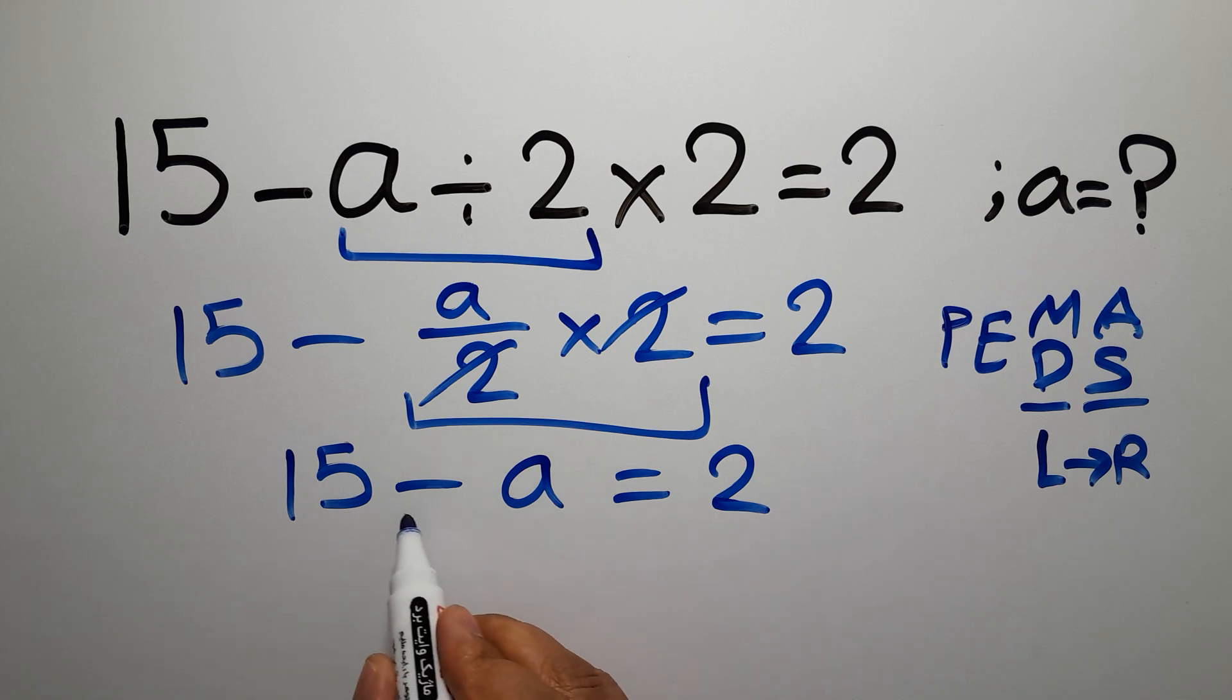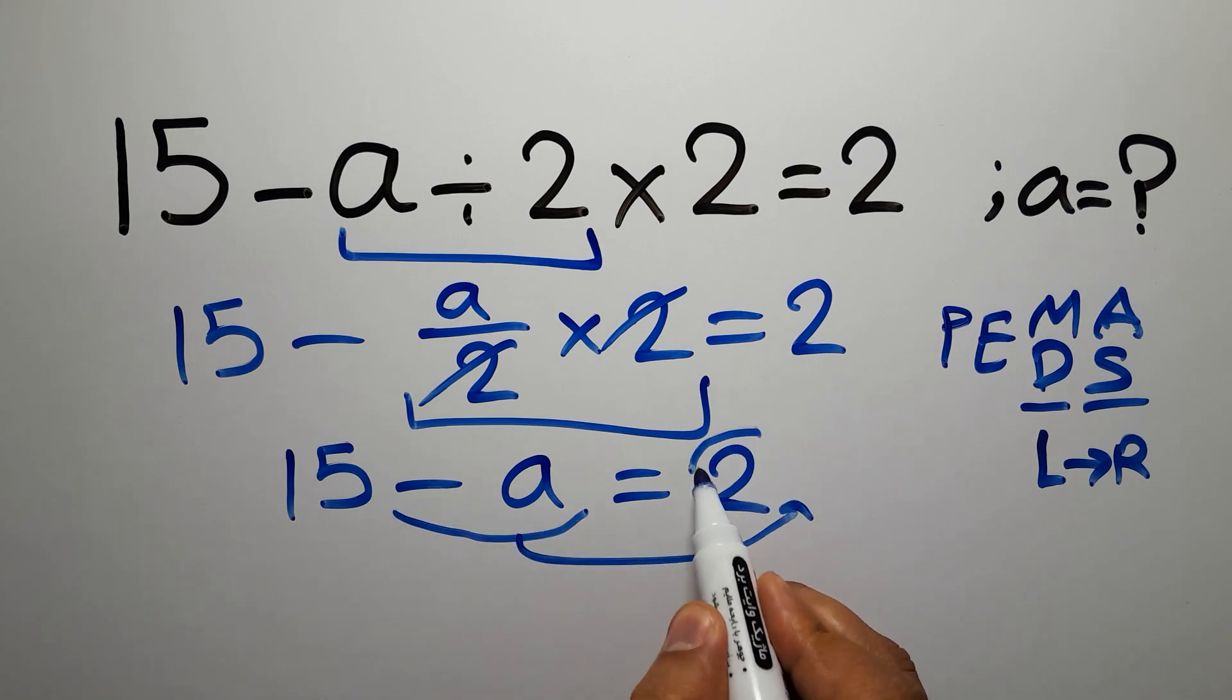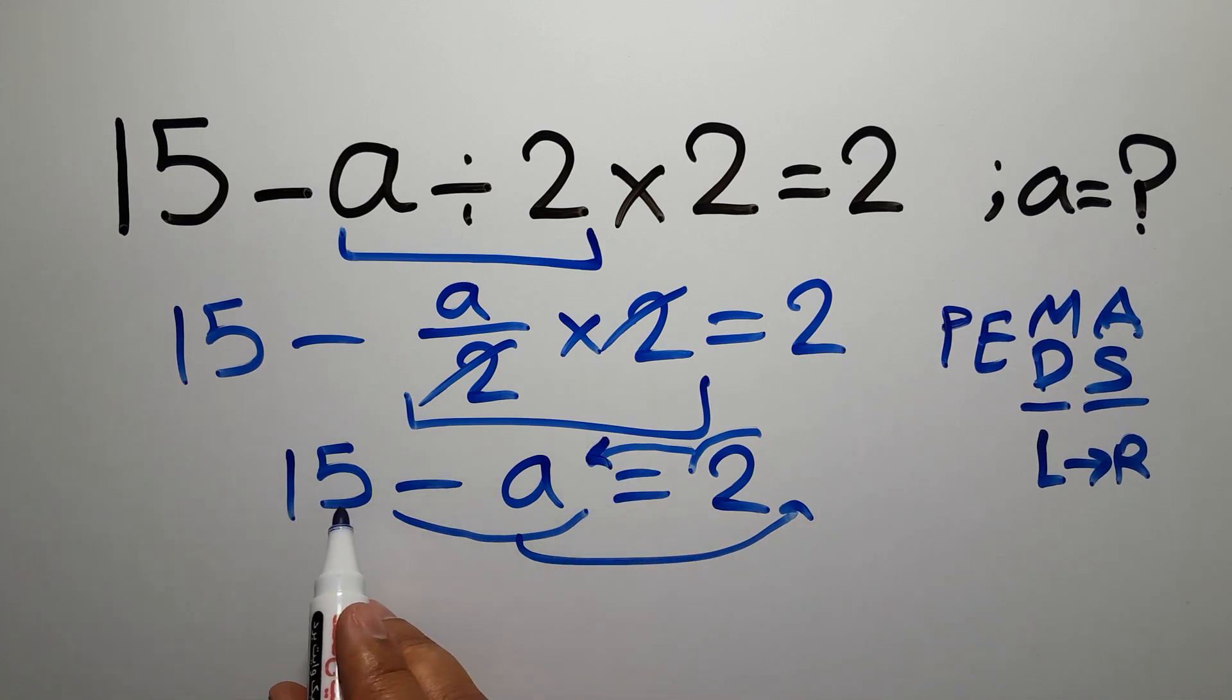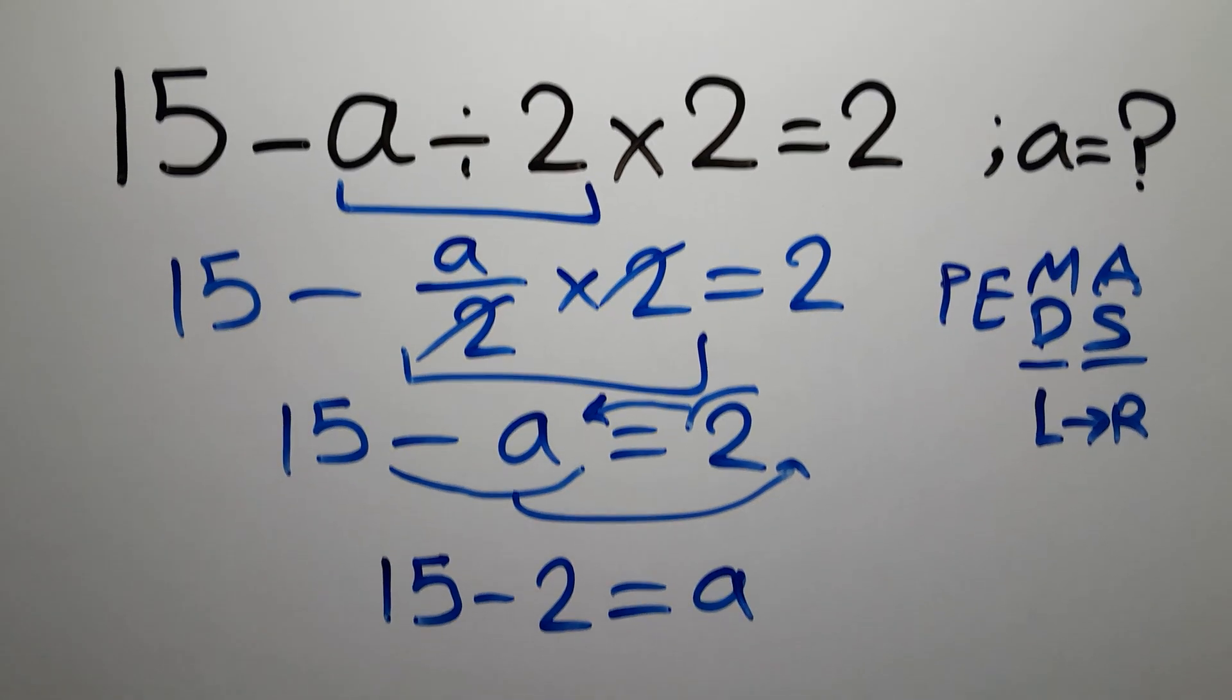Now let's move this minus a to the right hand side and this 2 to the left hand side. So on the left hand side we have 15 minus 2 equals just a.